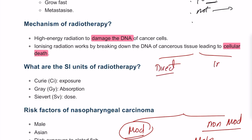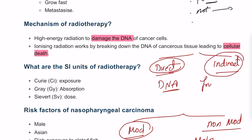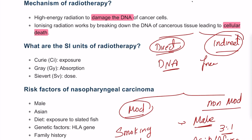The mechanism of radiotherapy can be classified into direct and indirect mechanisms. The direct mechanism damages the DNA of cancer cells, leading to cell death or necrosis. The indirect mechanism involves the production of free radicals that deprive tissue of oxygen, also causing necrosis.